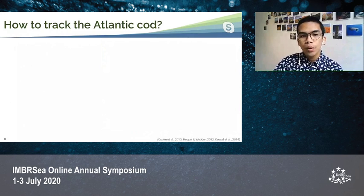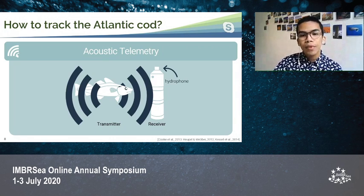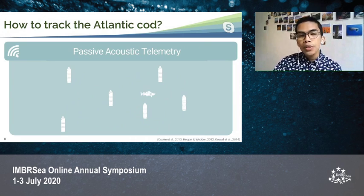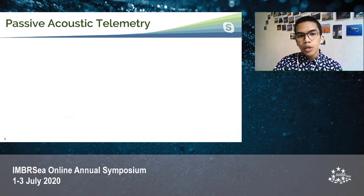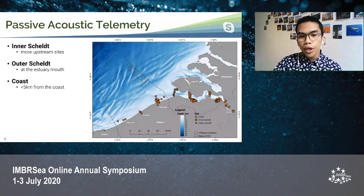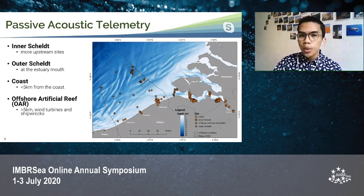How did we track the Atlantic Cod? We used a method called acoustic telemetry, which is composed of a receiver and a transmitter. The transmitter is implanted into the fish, which broadcasts unique sound pulses called pings, and these are received and recorded by the hydrophone of the receiver. Specifically, this study used passive acoustic telemetry with an array or network of receivers. If a fish passes by a receiver, it will detect its presence. The receivers were divided into several sites: the Inner Scheldt for upstream sites, the Outer Scheldt at the estuary mouth, coastal receivers deployed less than five kilometers from the coast, offshore artificial reef sites around wind turbines and shipwrecks, and offshore for receivers deployed in sandy bottoms.